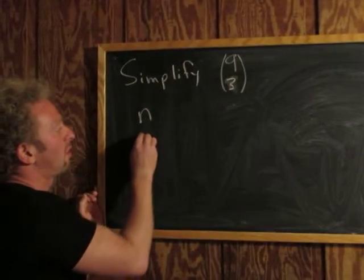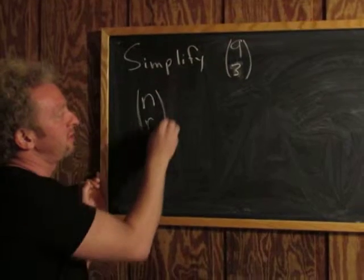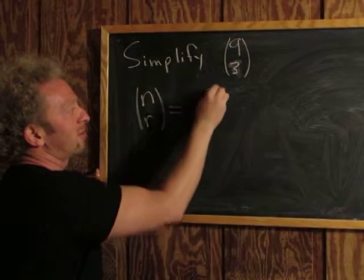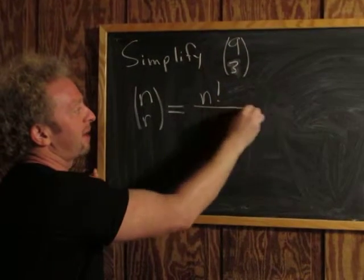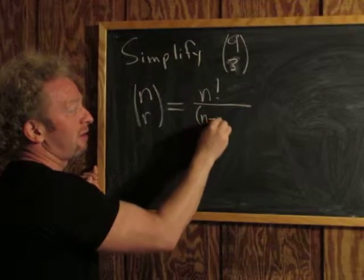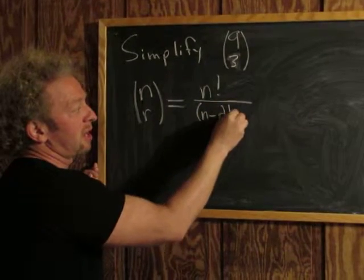n choose r is equal to n factorial divided by n minus r factorial times r factorial.